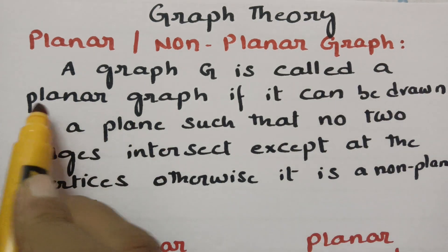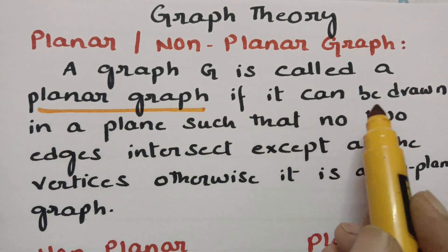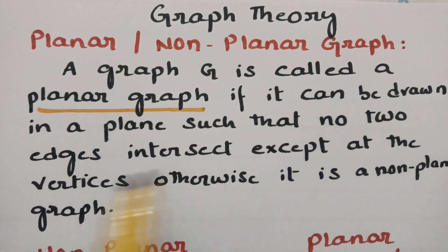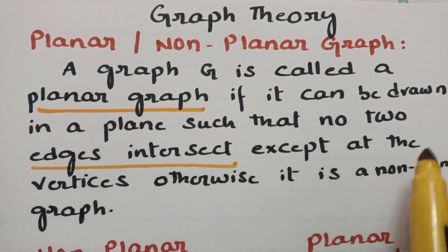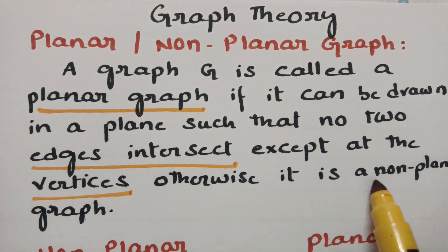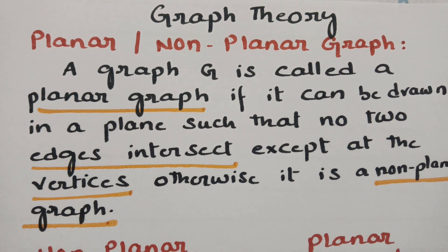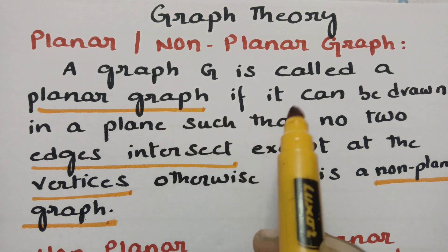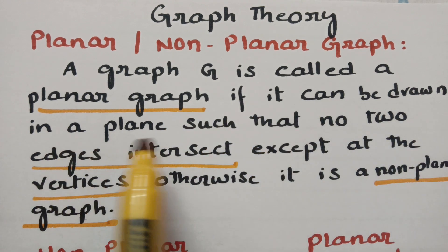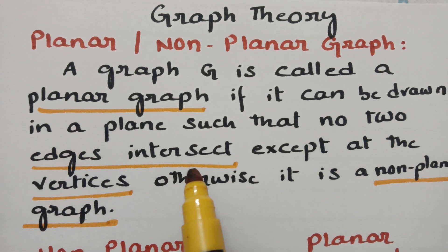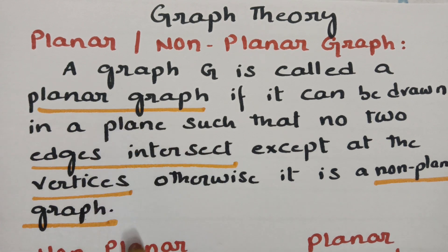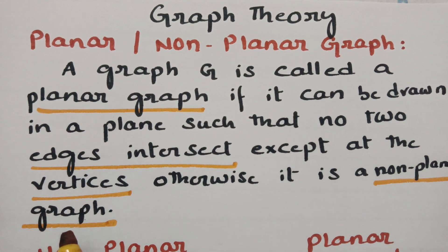A graph G is called a planar graph if it can be drawn in a plane such that no two edges intersect — no two edges intersect except at the vertices. Otherwise it is a non-planar graph. So there is no edge crossing. If there is no edge crossing in the graph we say the given graph is planar. If there is an edge crossing then we say the given graph is a non-planar graph.